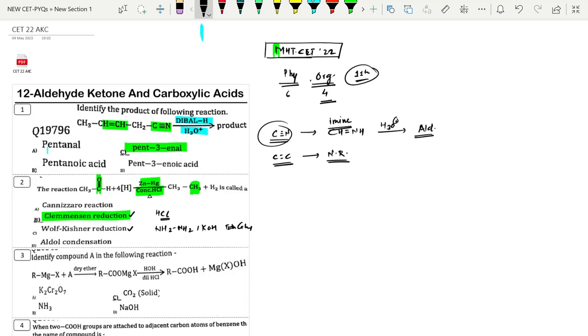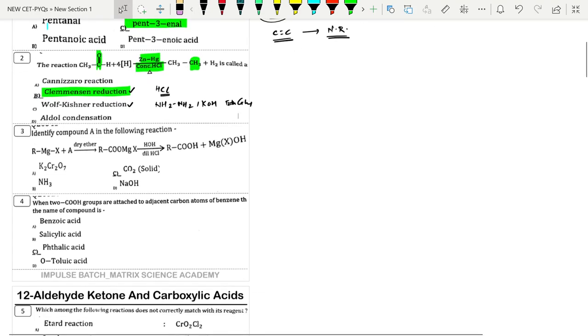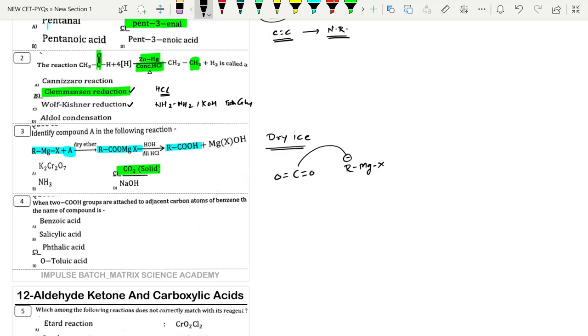Next one: RMgX is a Grignard reagent. When we are adding compound A, then adding carbon, and the final product is carboxylic acid. So this reaction is given by dry ice. Dry ice is CO2 in solid form. So CO2 solid form has carbon. The R group which is electron rich, RMgX where R has negative charge, actually attacks the carbon. The oxygen gets the negative charge.